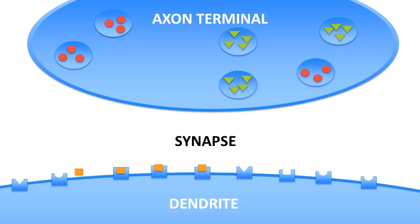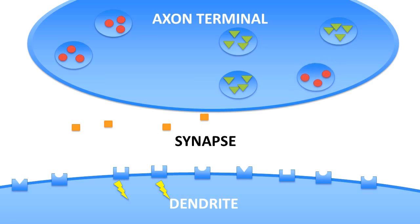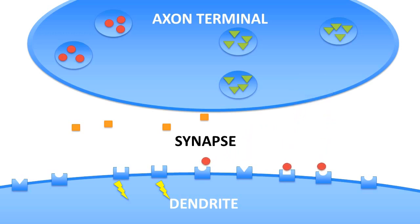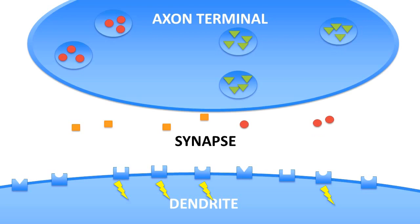Those receptors — you can basically think of it as a lock and a key. You have different neurotransmitters that fit different receptors. This is making it more positive, potentially bringing it down to that negative 50 millivolt threshold. But it's certainly not this simple. Whenever an electrical charge reaches an axon terminal, it's going to trigger the release of tons of neurotransmitters. This entire process can occur within the span of just a few milliseconds — your neurons can communicate with each other at incredibly fast rates.